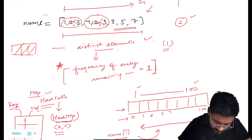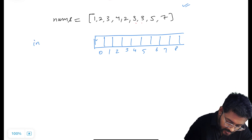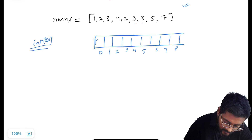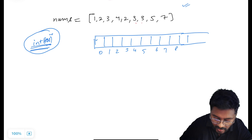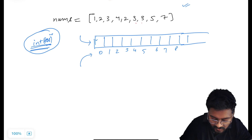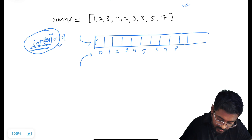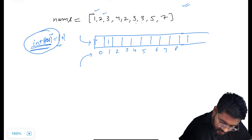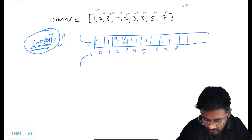Let me run through the example. For the given integer array, I take an integer array of size 101 with all values initialized to zero. As I iterate: element 1 is incremented to 1, then 2, then 3 — each to 1. Then element 4 is incremented. Element 2 appears again, so it becomes 2. Element 3 appears again, going to 2 and then 3. Element 5 is 1, element 7 is 1. The frequency table is now captured.